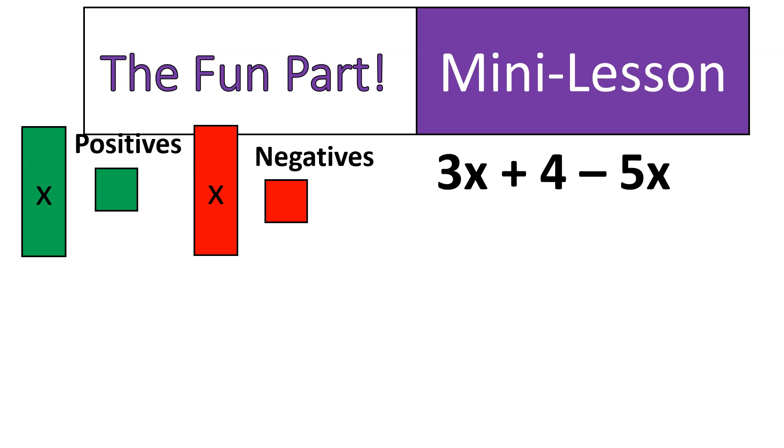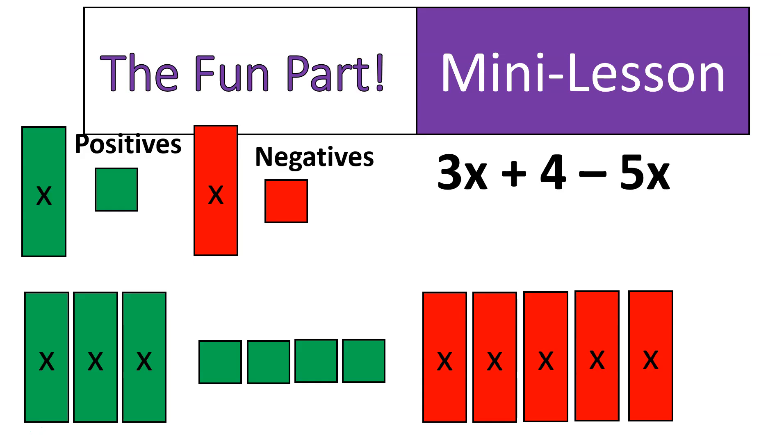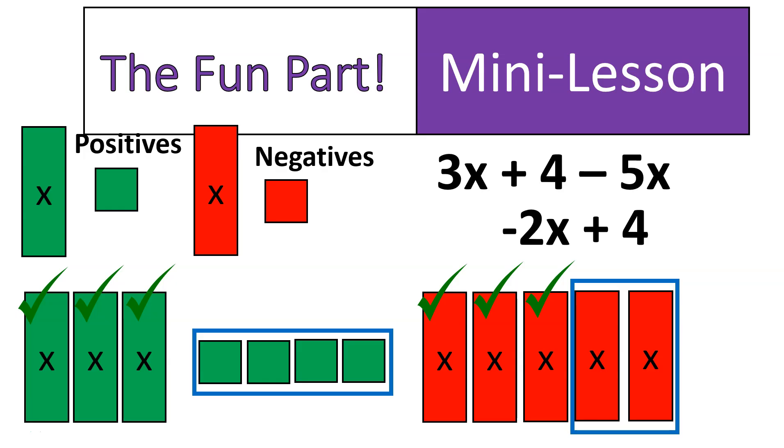Here's my sample question. 3x plus 4 minus 5x. The way I would set it up is I would grab my variable tiles. Three of the x's, or three of the variables, four numbers, and they're positive. So they're going to be green. And I have minus 5x, or negative 5x. So I'm going to have five red variable tiles. Now I can cancel them out by finding the things that are exactly the same and are both positive and negative. In this case, I have three positives, so I can cancel out three negatives. And that tells me that what I have left is those two negative x's, and I still have these four left over. So my final answer would look something like this. I have negative 2 of the variables, negative 2x, plus 4, because those are positive 4 that are left over.